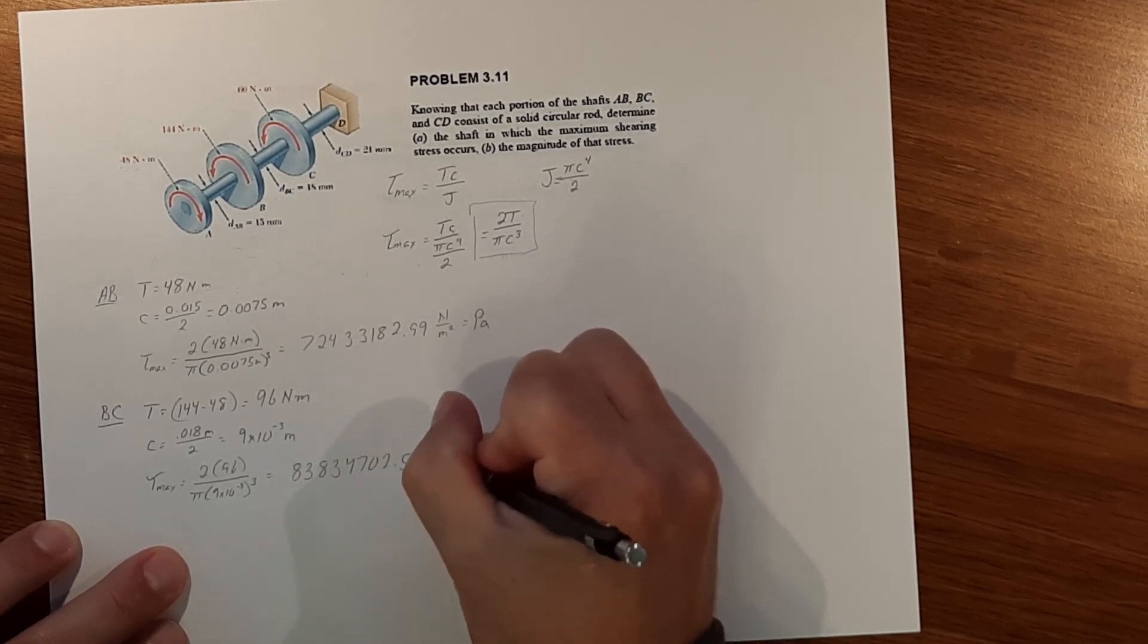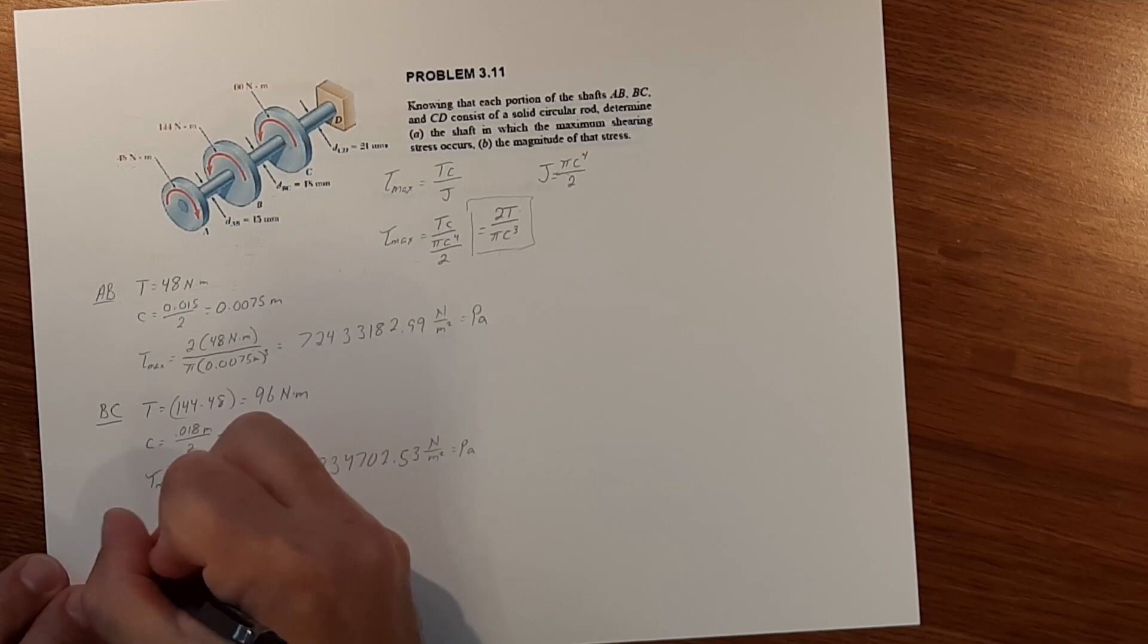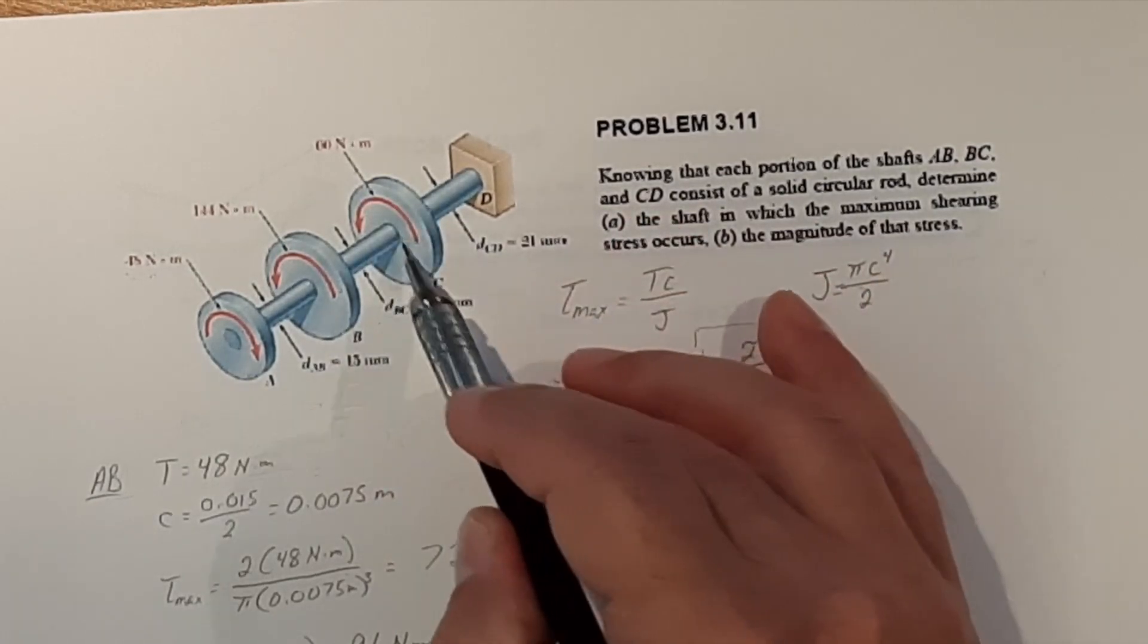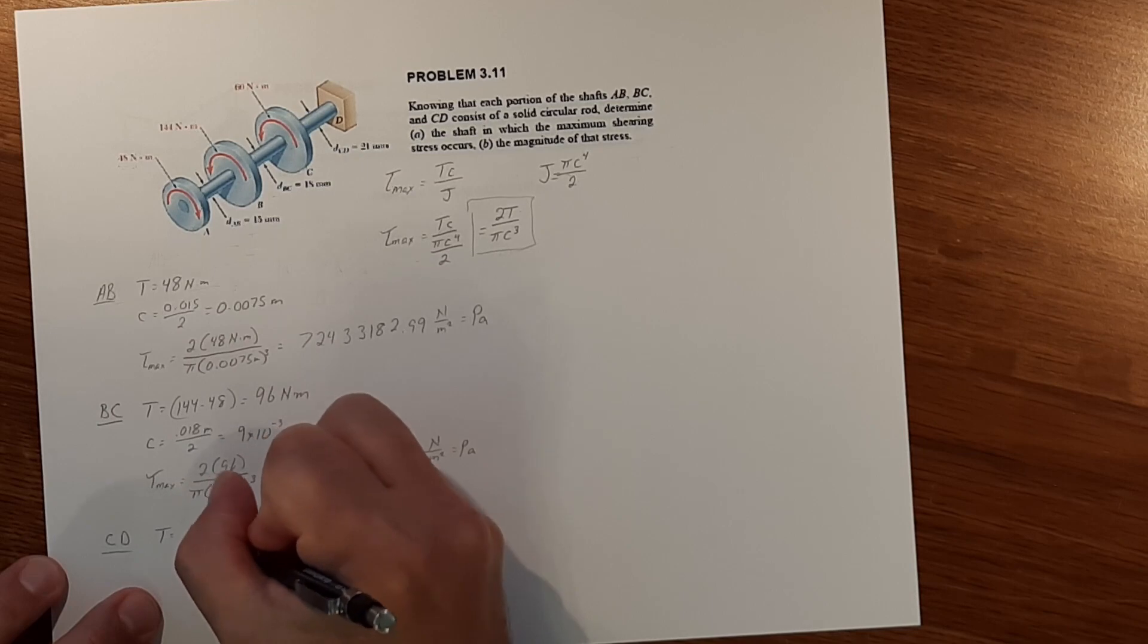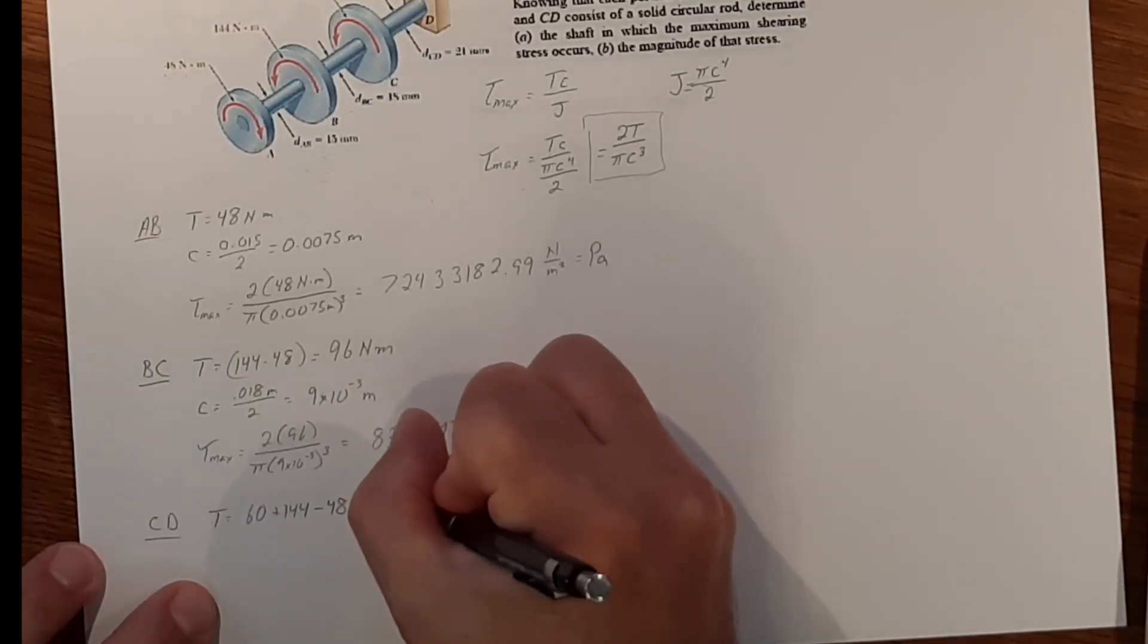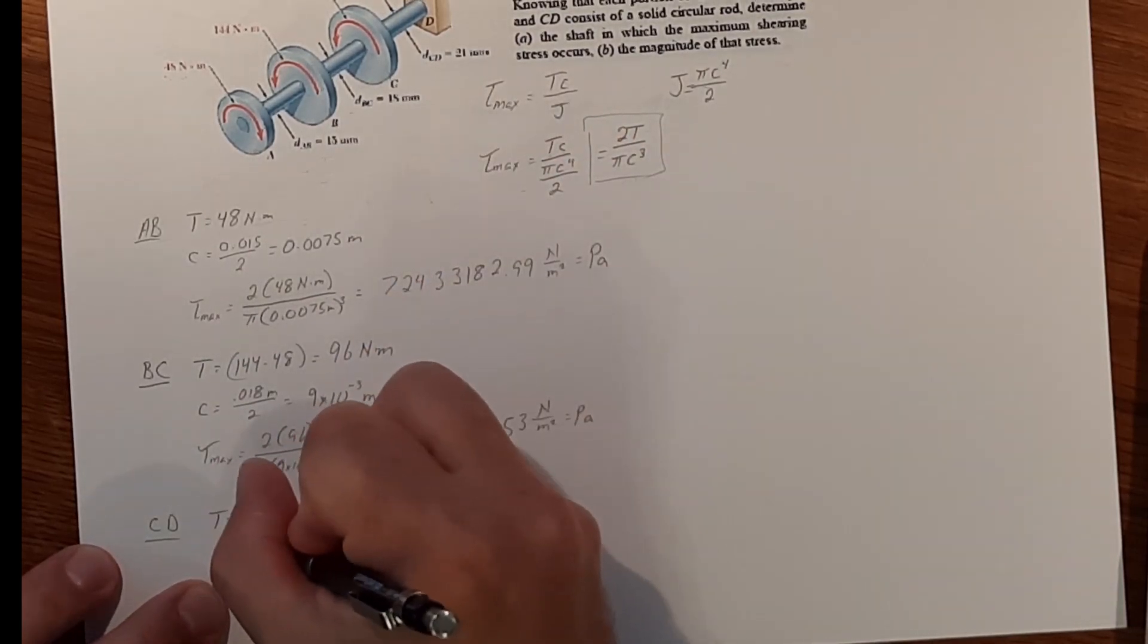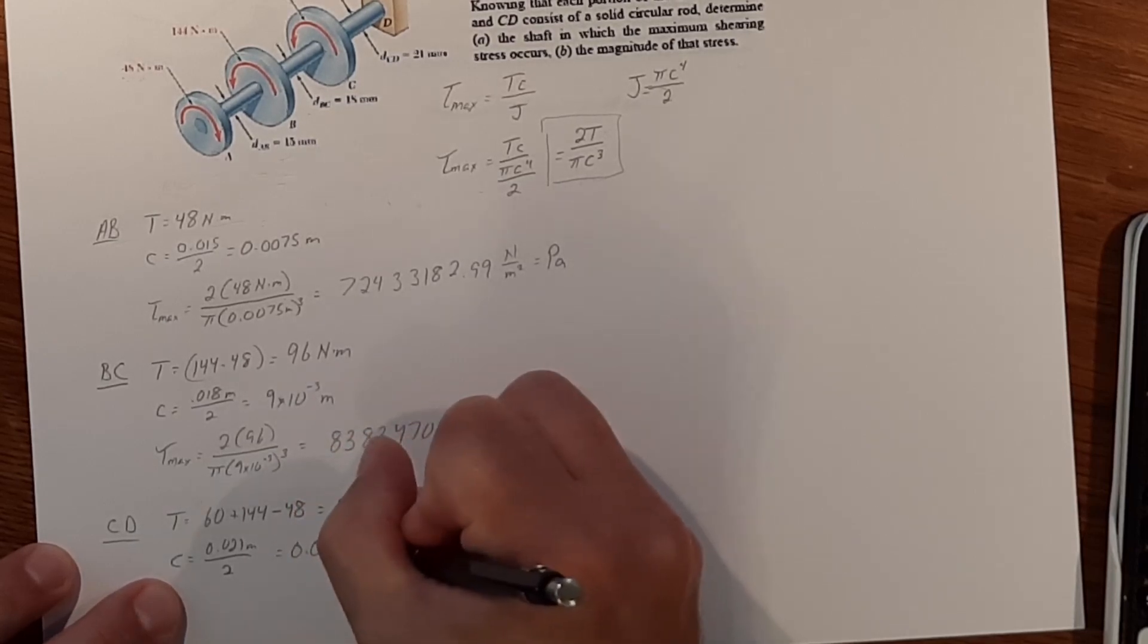For CD torque seen in CD is equal to 60 plus 144 because they're both rotating the same direction minus the 48. We have 60 plus 144 minus the 48 equals 156 Newton meters. C the radius, the diameter is 21 millimeters so 0.021 meters over 2 and that equals 0.0105 meters.